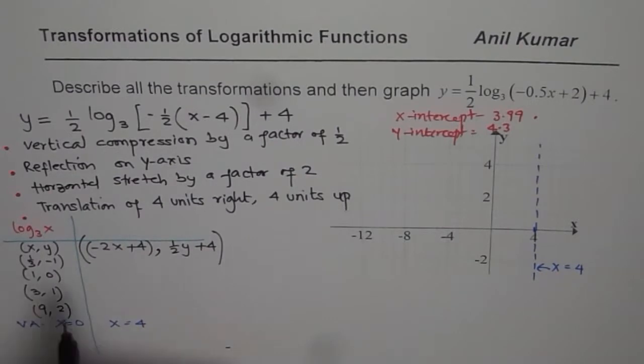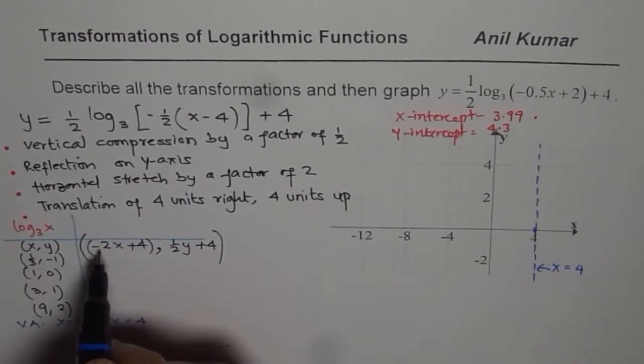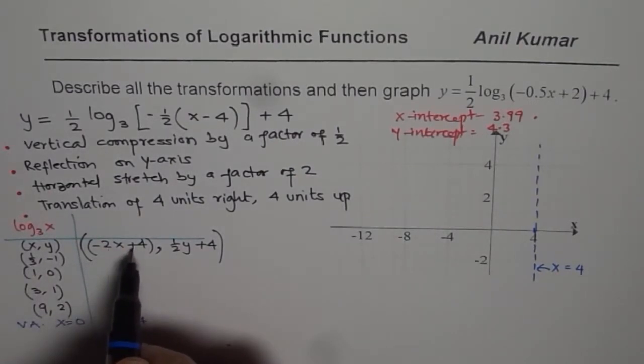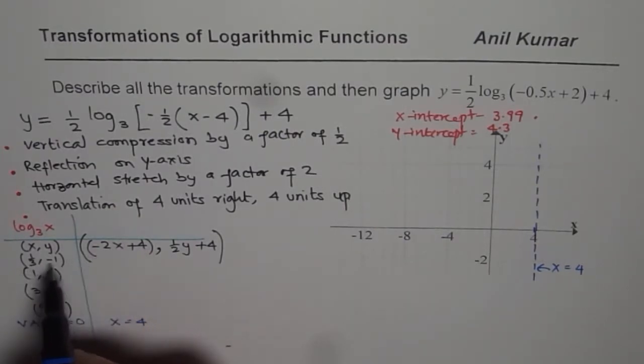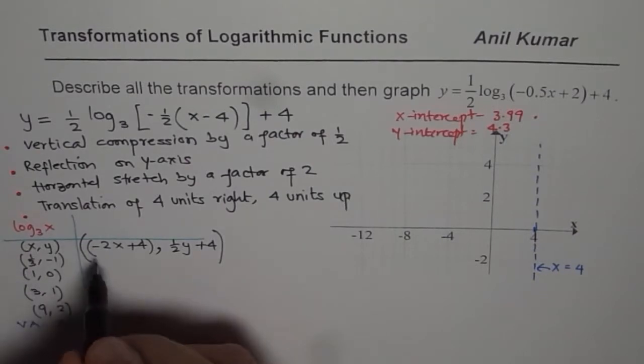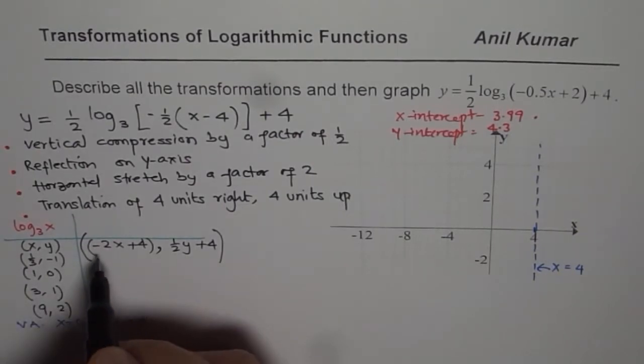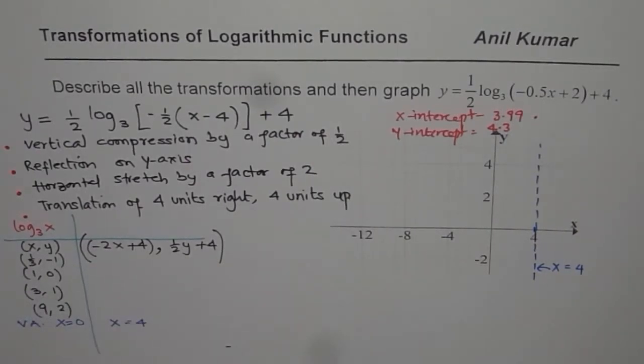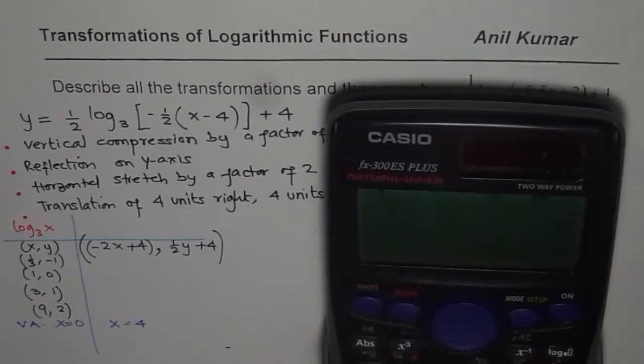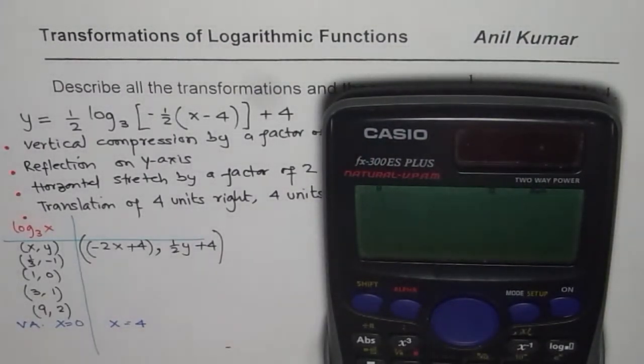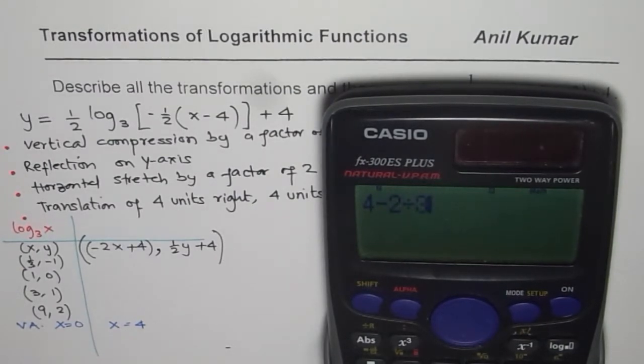Now let us calculate these values. So 1/3 will be minus 2/3 plus 4. So minus 2/3 plus 4 is the x value when you use 1/3. So minus 2/3 plus 4, let us use the calculator. So minus 2, we can say 4 minus 2 divided by 3.